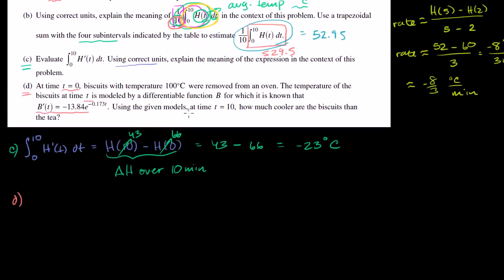Using the given models, at time T equals 10, how much cooler are the biscuits than the tea? We know what the temperature of the tea is, so we just have to figure out the temperature of the biscuits. We can use essentially the same idea as before.